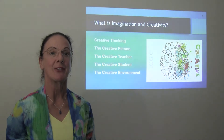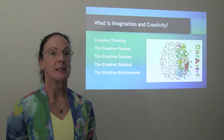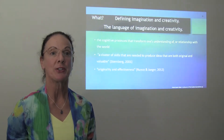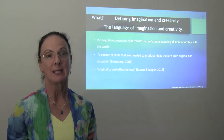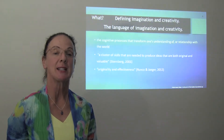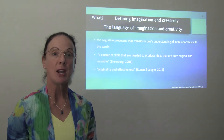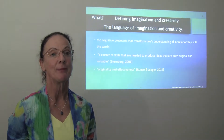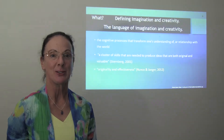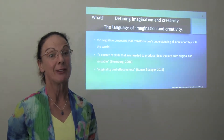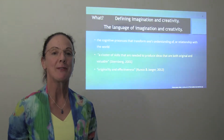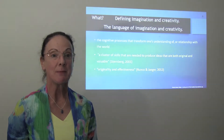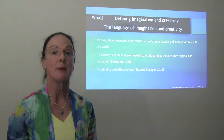What is imagination and creativity? In terms of processes, it is the cognitive processes that transforms one's understanding of or relationship with the world. Sternberg describes it as a cluster of skills that are needed to produce ideas that are both original and valuable. Ronko and Jager argue that originality and effectiveness is what determines whether something is defined as being creative. As educators wanting the best outcomes for our students, we seek to understand what creativity is and can be. We all have imagination and creativity in our human design.